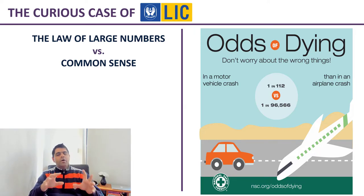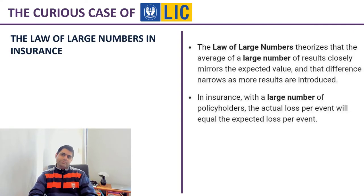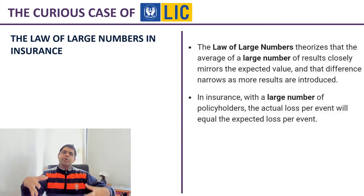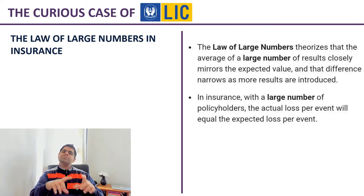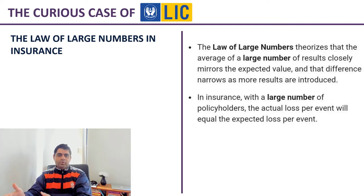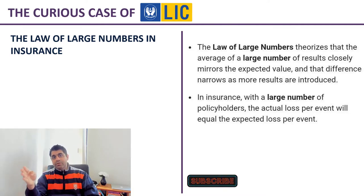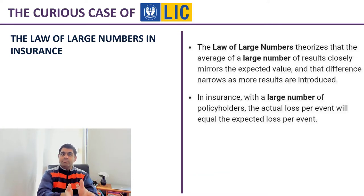Now that we know how the law of large numbers works, how do insurance companies implement it in their business? All they have to do is make sure they insure enough people — sell enough insurance policies — to not only cover all the claims that will be made, but also ensure the company remains profitable and solvent in the long run. They rely on the law of large numbers: for example, while driving, 1 out of 112 instances leads to accidents, meaning 111 out of 112 times they will not have to pay a claim.